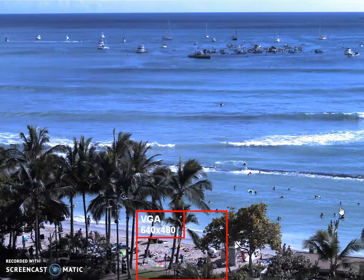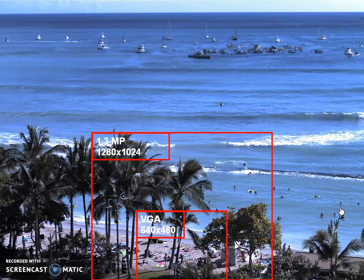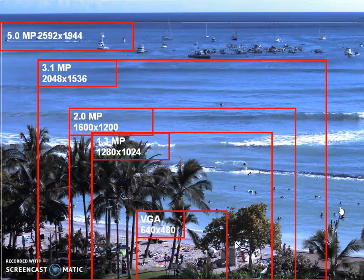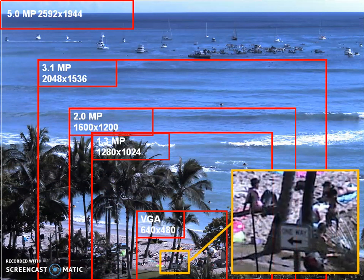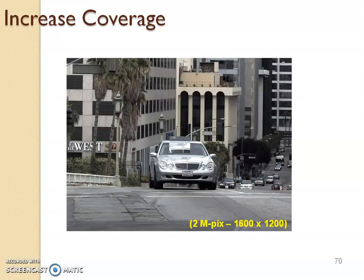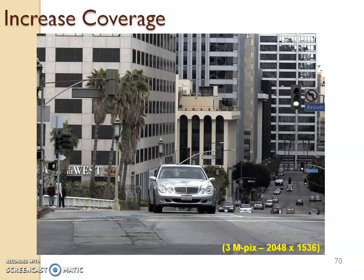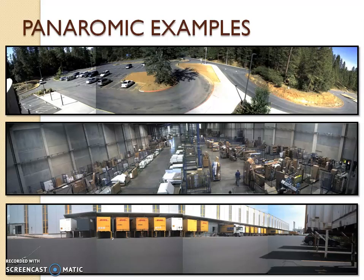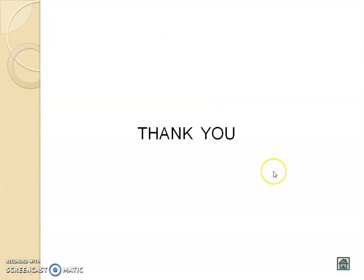Looking at a resolution comparison: a VGA of 640x480, then 1.3 megapixel, 2 megapixel, 3.1 megapixel, and 5 megapixel — you can clearly see the improvement in image clarity. Regarding coverage, the wider the VGA, the greater the coverage area. For better clarity we also have panoramic examples. With this, I am concluding this module on CCTV and the advancement in CCTV, which is an important aspect of building management systems. Thank you.